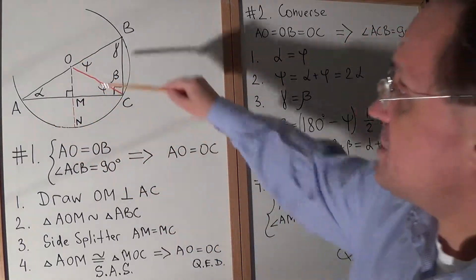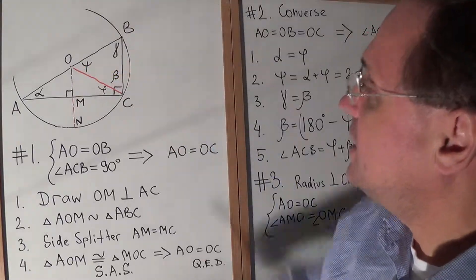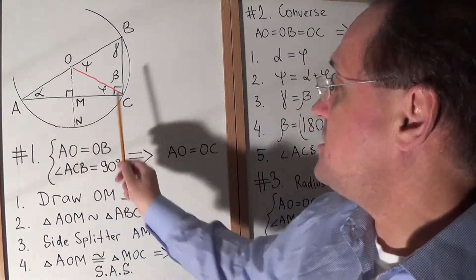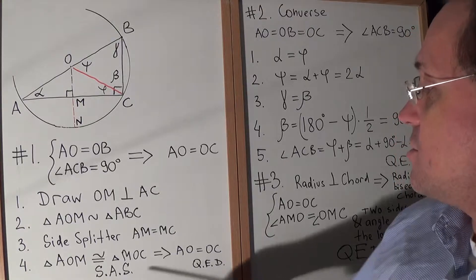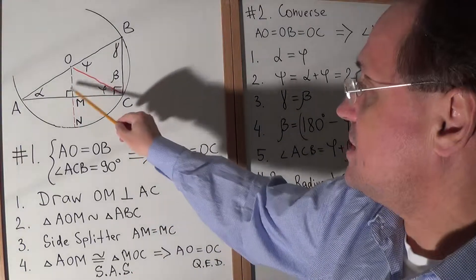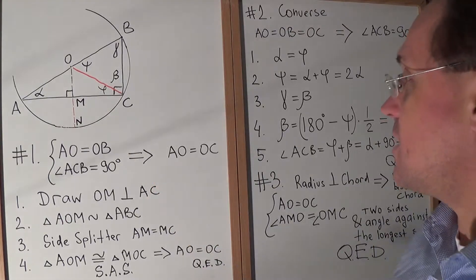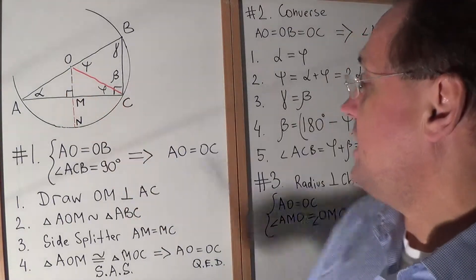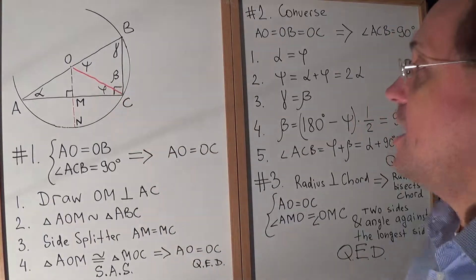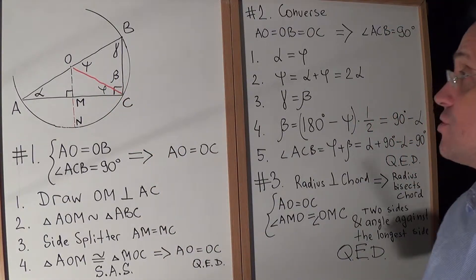Now let's look at triangles AMO and OMC. These triangles have this side mutual, and AM equals MC, which we just proved. So by SAS, this angle is right angle. SAS postulate, these triangles are congruent, and therefore AO equals OC. We've proved the theorem.